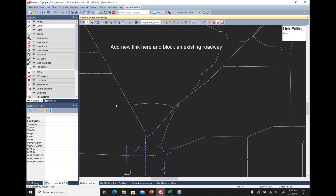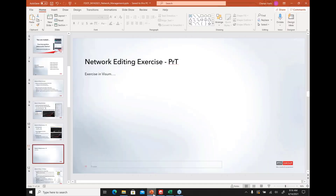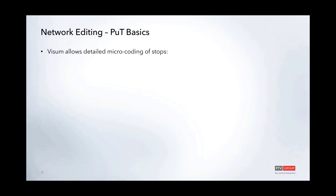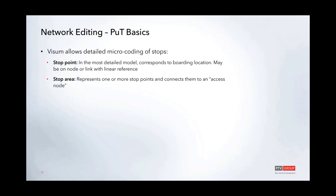On the transit side, vZoom allows detailed micro-coding of stops at three levels. First is the stop point — the most basic entity corresponding to the boarding location. It may be on a node or a link with a linear reference, and may serve one or both directions. Second is the stop area, which represents one or more stop points. Two stop points on either side of a road can be grouped into one stop area so that an access node only needs to connect to the stop area, making both directions automatically accessible.